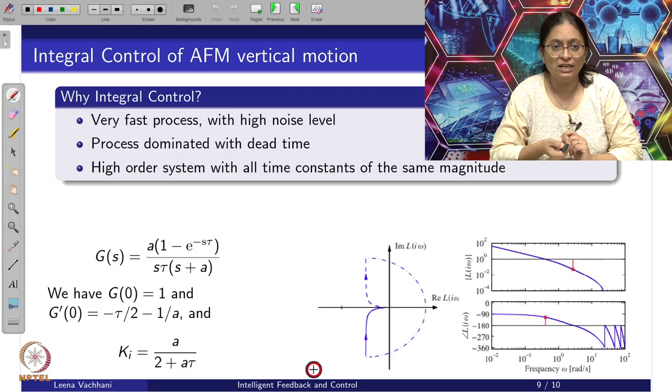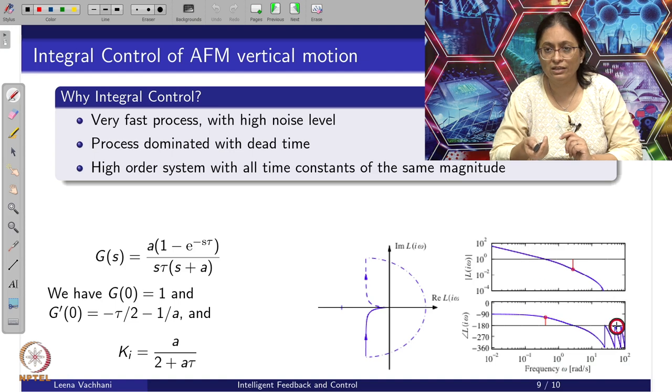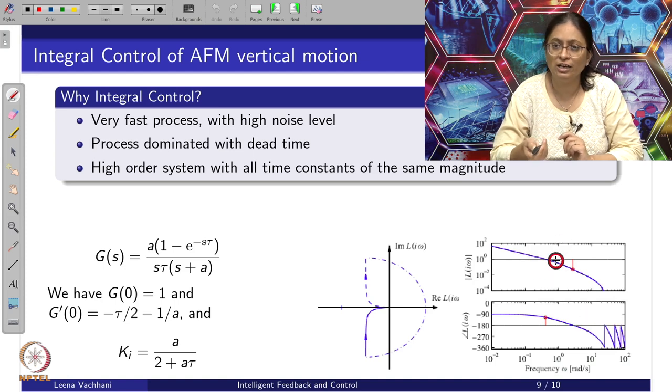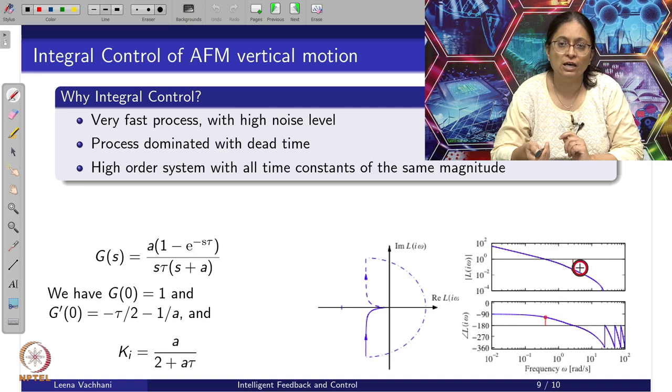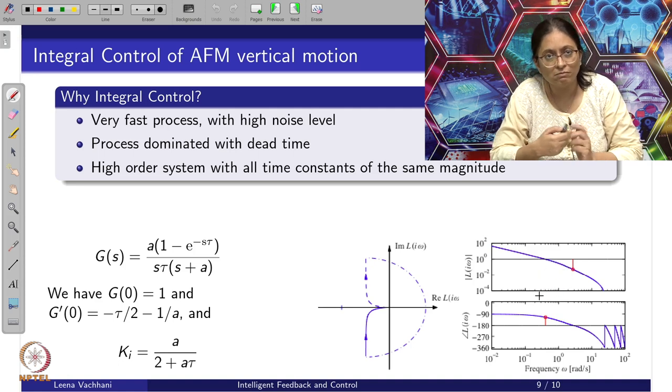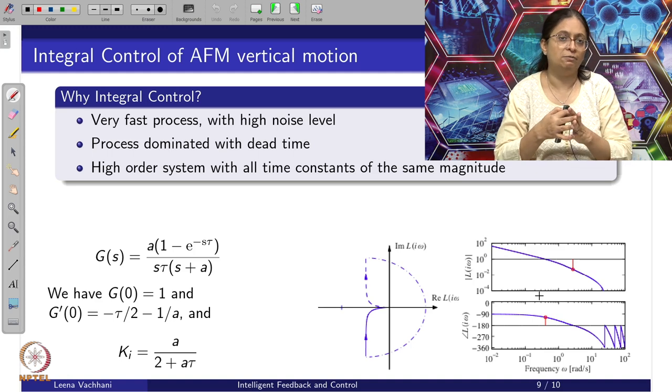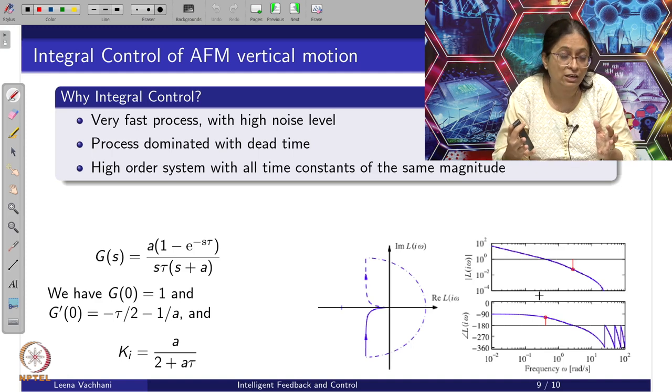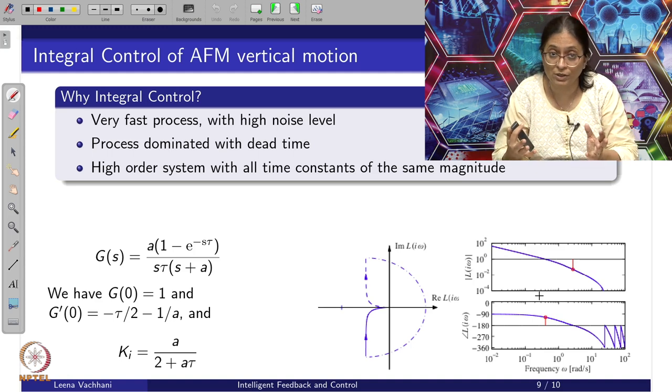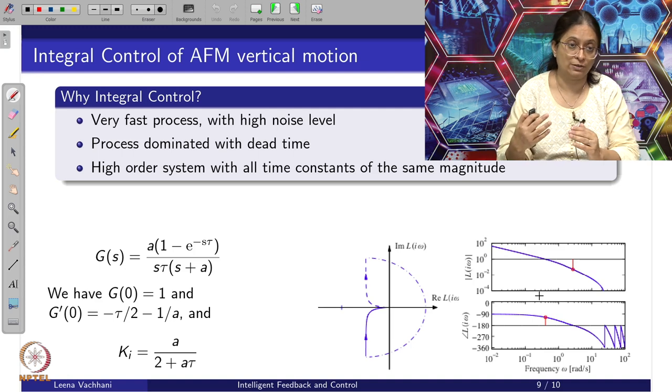With this, when we plot the Bode plot, we get a fairly good stability margins, which shows that the design is appropriate. What we have gained out of this is first of all, the idea behind how the atomic level measurements have to happen with the help of control design. The second level was which controller to apply.